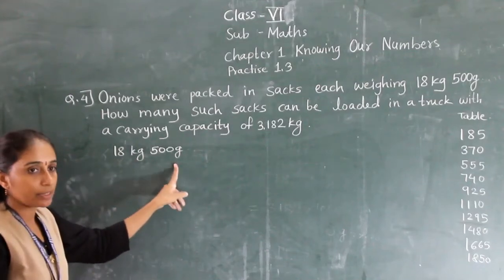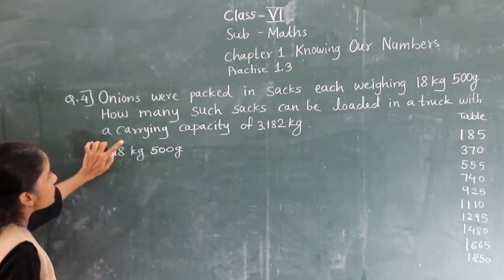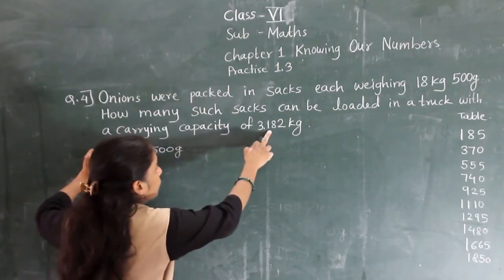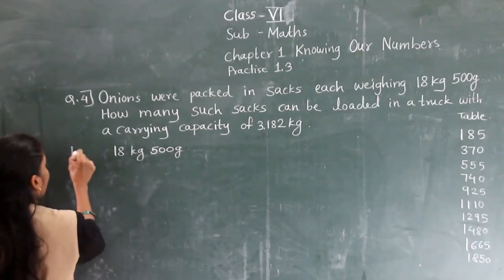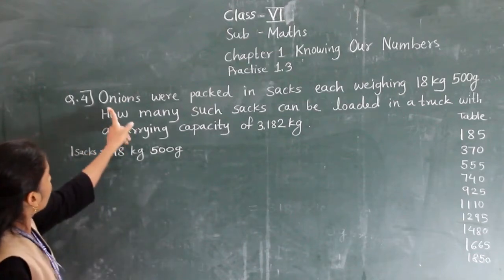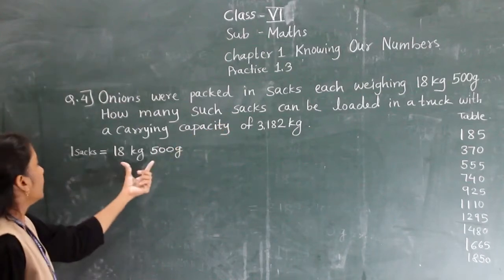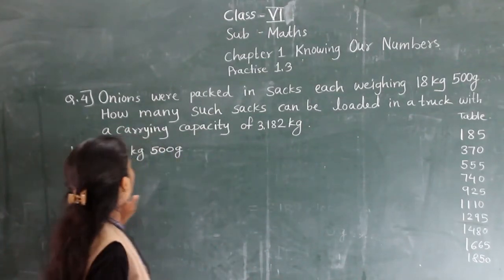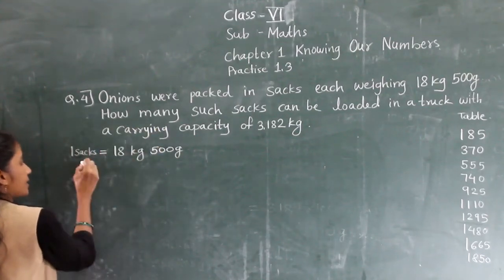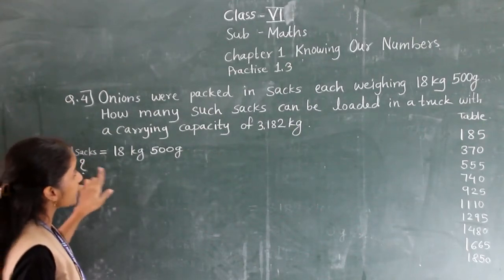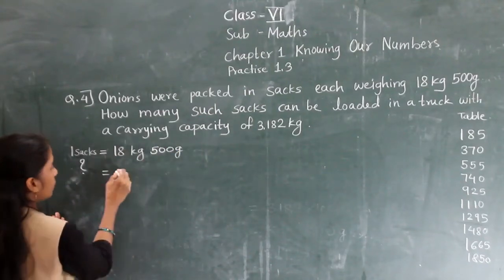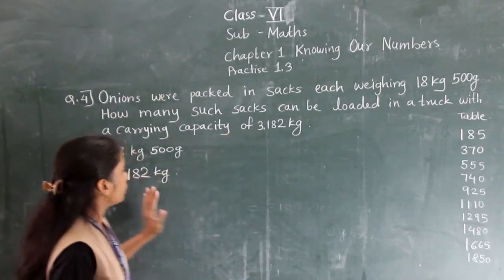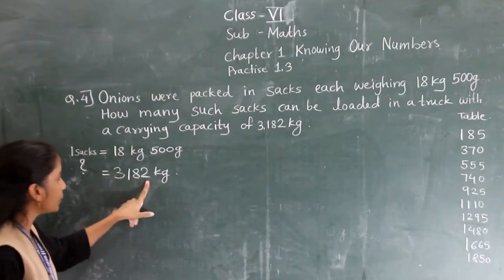In one sack this much onion can be packed. How many such sacks can be loaded in a truck with a carrying capacity of 3,182 kg? Yes, we need to find the number of sacks. The capacity of the truck is 3,182 kg.